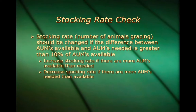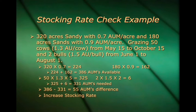We can take all of that information and do a stocking rate check. We would change the stocking rate if the difference between the AUMs available and the AUMs needed is greater than 10% of the AUMs available. In the case where there are more AUMs available than needed, we can increase the stocking rate. In the case where more AUMs are needed than are available, we decrease the stocking rate.